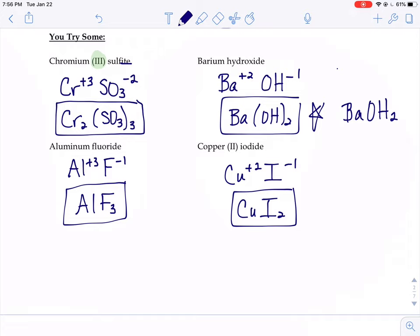That would mean one barium, one oxygen, two hydrogens. That's not what we want - we want two hydroxide ions to balance out our barium ion. Last one, copper Roman numeral two iodide. The Roman numeral tells you the charge.